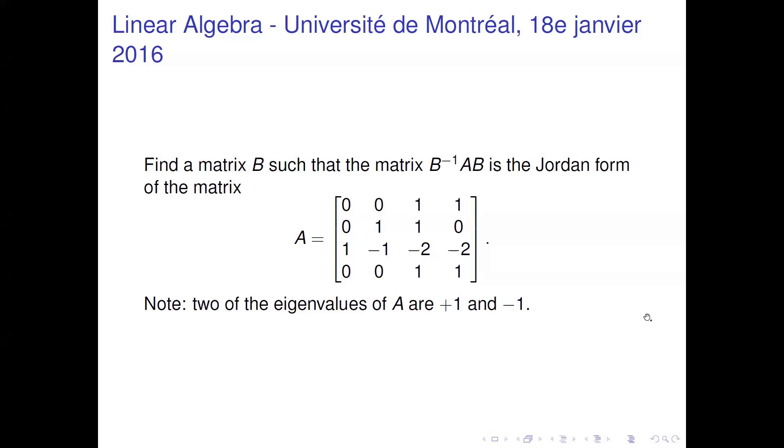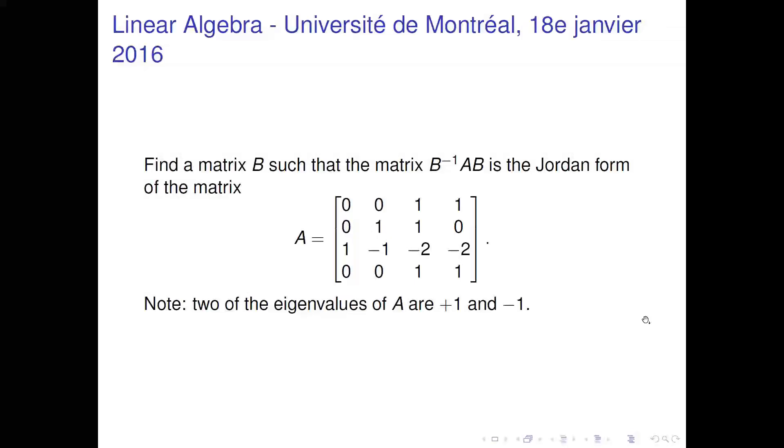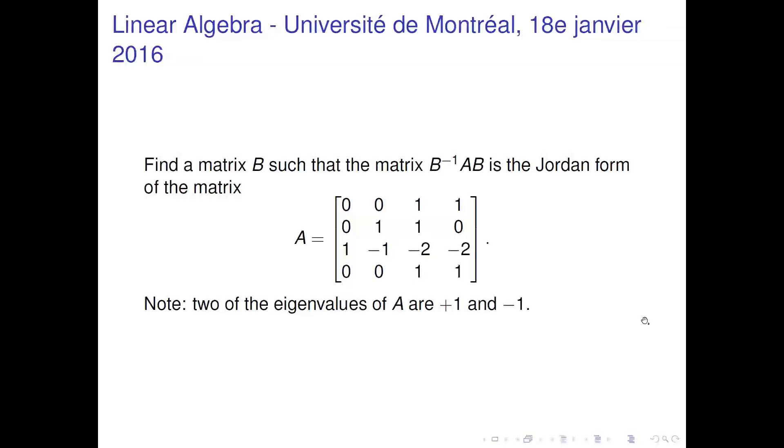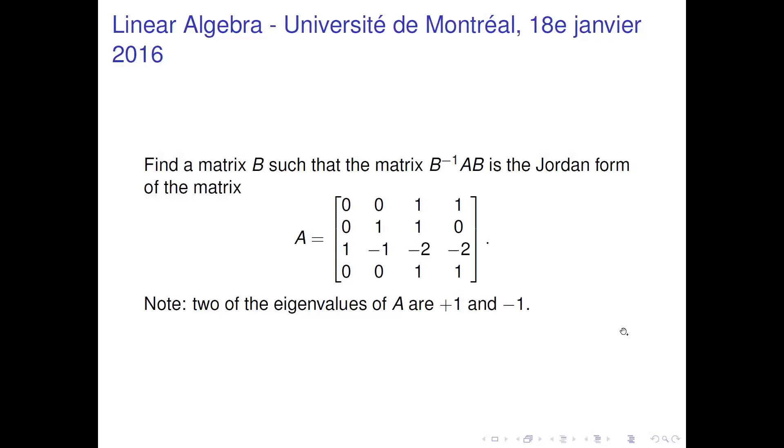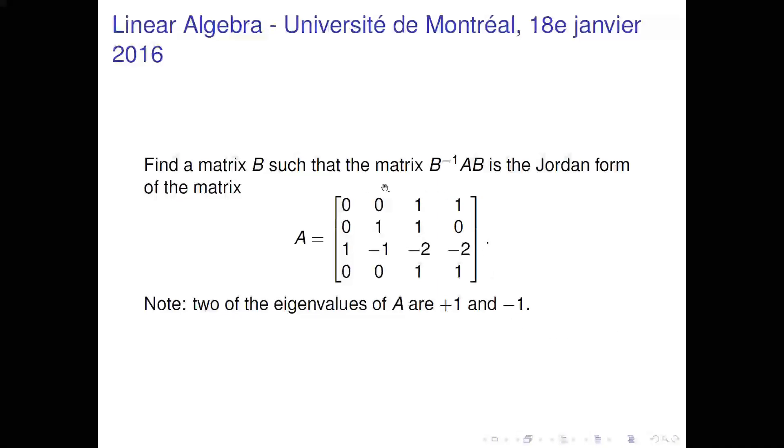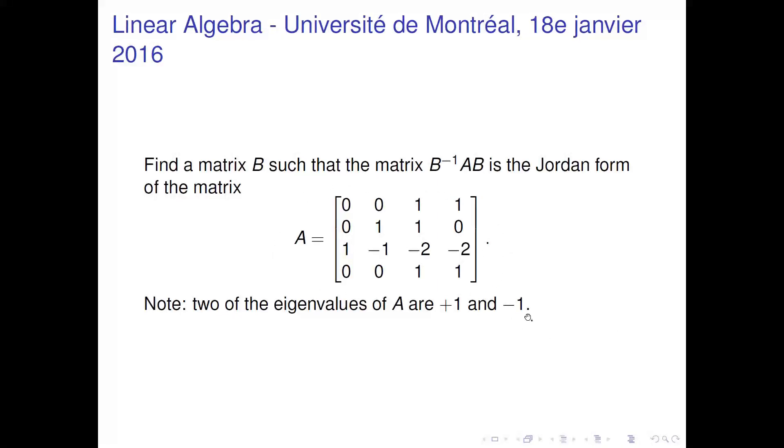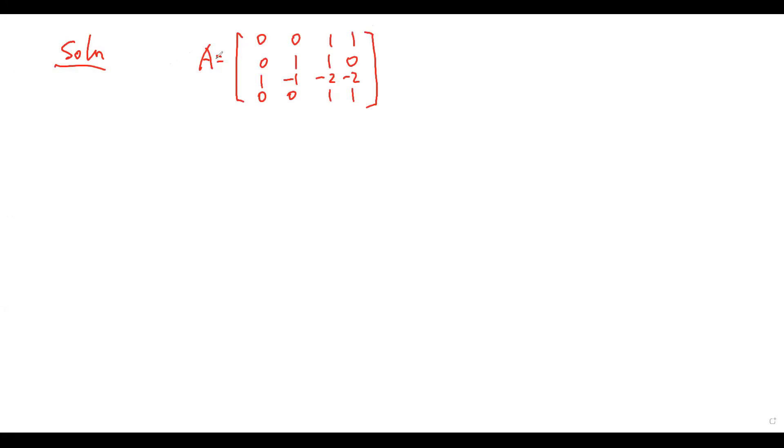Hi, question for Linear Algebra in the PhD Qualifying Exam, University of Montreal in the year 2016. Find a matrix B such that the matrix B inverse A B is the Jordan form of the matrix A. A is given by that matrix.